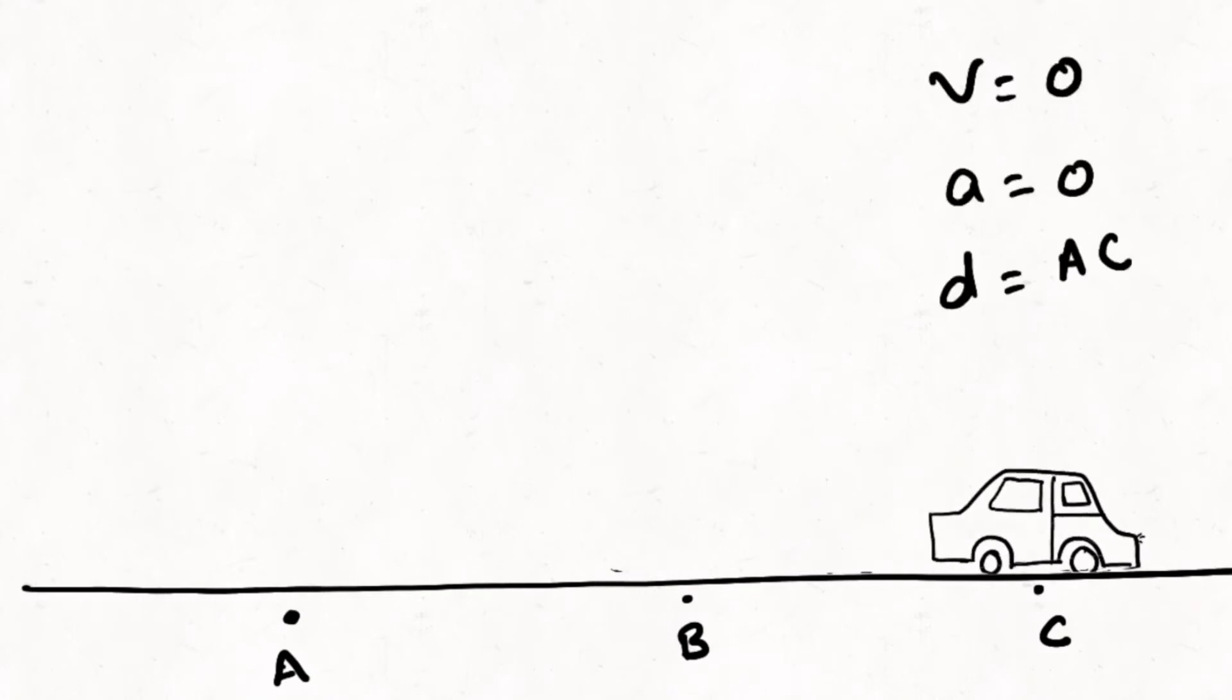At the final point, the displacement will be complete from A to C. The acceleration will be zero because the car has stopped and there is no change in velocity. The velocity will also be zero. So this is one complete cycle.